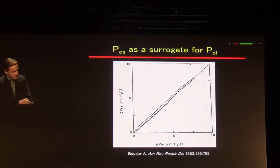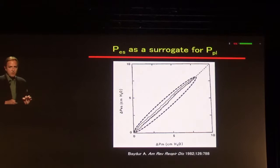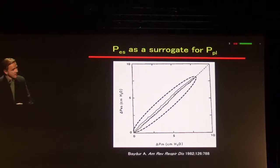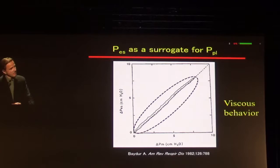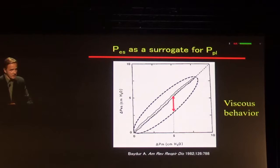Another problem with the esophageal balloon is that during the occlusion test, ideally we'd like to see very little hysteresis. This is the swings in esophageal pressure plotted against airway pressures. Typically you'd like to see minimum hysteresis, but especially when the patient performs very quick efforts or you are compressing very quickly, you see a larger hysteresis loop. This is because of viscous behavior of the esophagus or thoracic structures, which means that if you pick up the peak esophageal pressure, you can underestimate the swings.